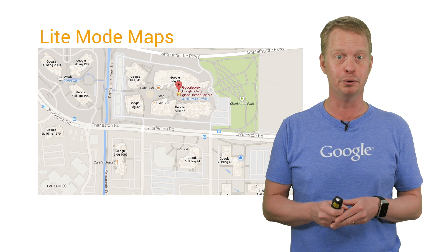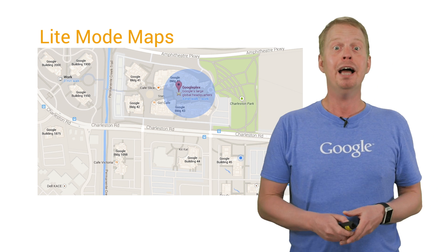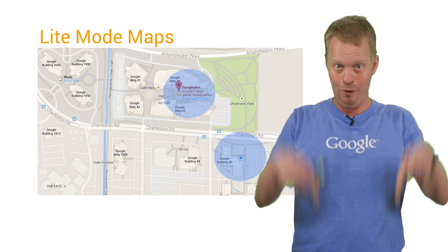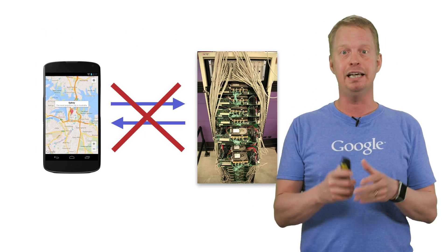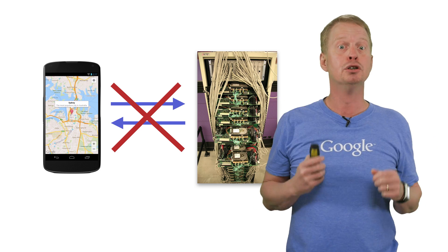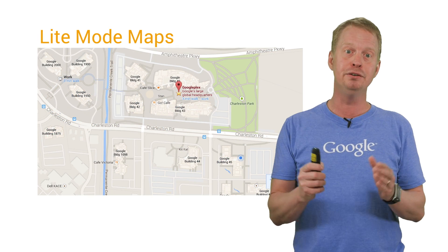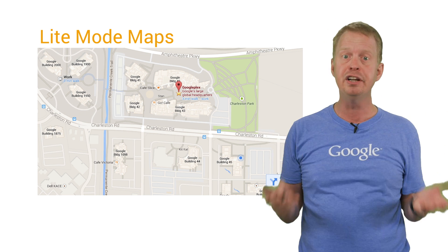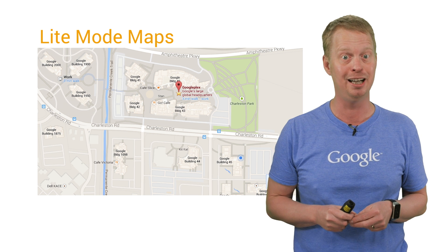Markers and polylines are also supported — here you can see a marker for the Googleplex, for example. User location can also be displayed. And since Light Mode Maps are based on a static image, there is no need for continuous server communication to update the map, so you can truly say that they are Light Mode. So if you have a bounded area, or maps that are too small to interact with, or if you want to stack a number of small maps together, then you should consider using Light Mode Maps.